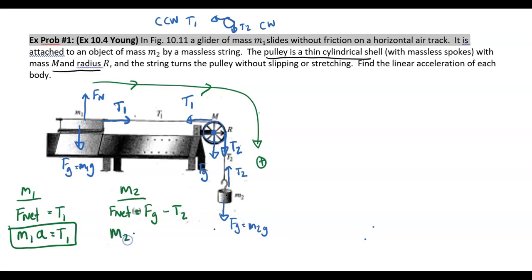And then F net is going to be M2A, which equals FG is going to be M2G minus T2.